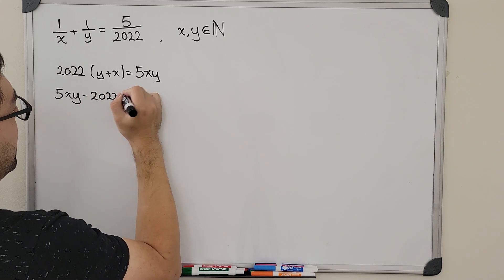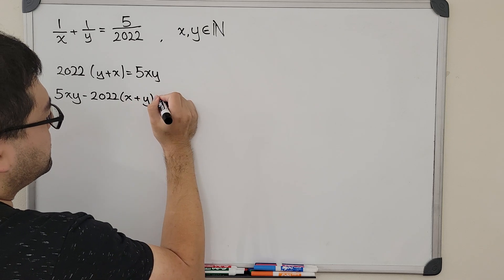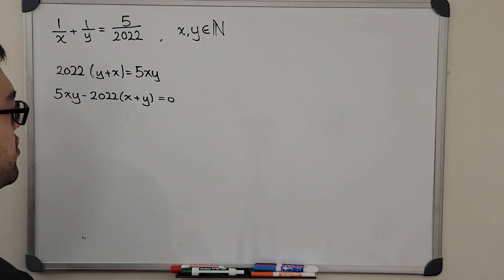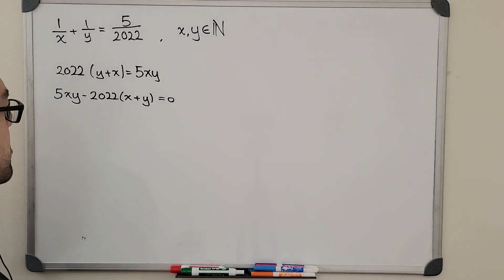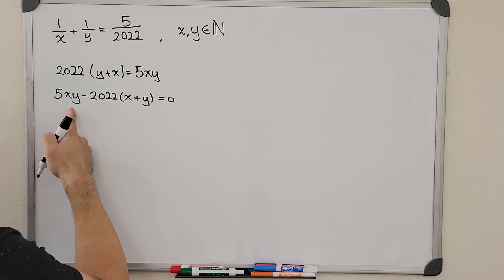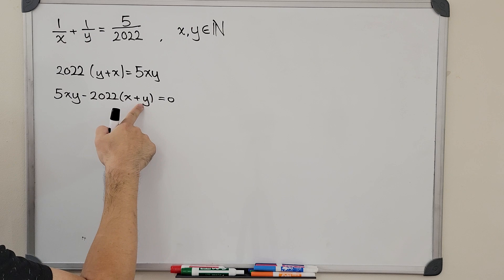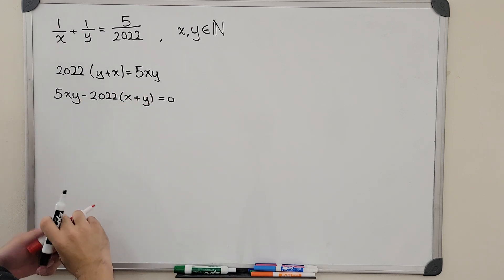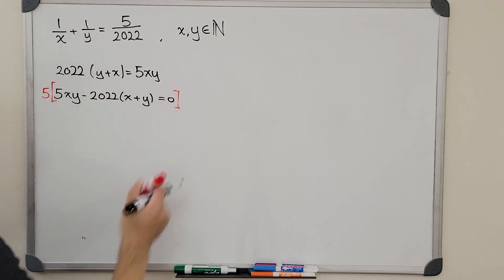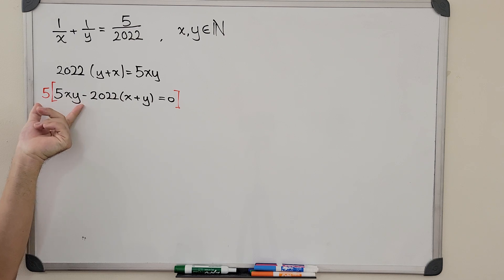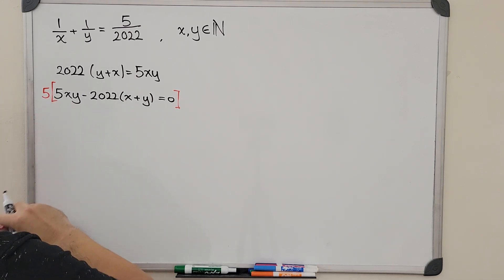We collect everything to one side to get 5xy minus 2022 times the quantity x plus y equals zero. The trick for solving this as a number theory problem is to factor the left-hand side into a product. Right now we can't factor because of the 5 in front, so we multiply the whole equation by 5. This way, the leading coefficient becomes a perfect square, and we can rewrite the first term as 5x times 5y.